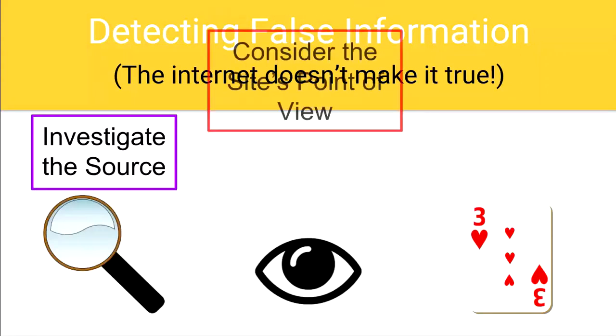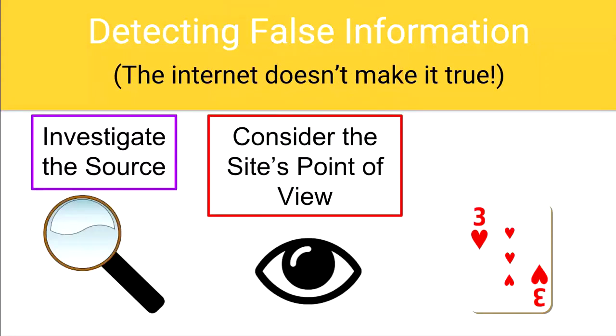The second tip, consider the point of view of the website. If a cigar company writes about a healthy brand of cigar, consider the point of view that the company ultimately wants to sell you cigars and use common sense that cigars are not healthy.